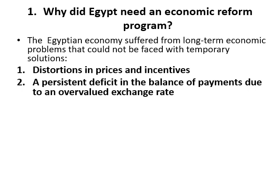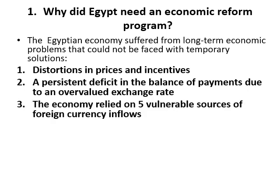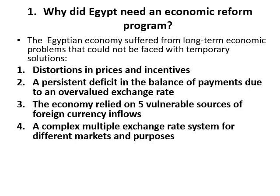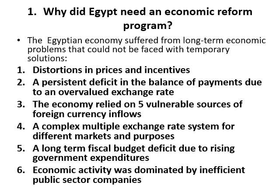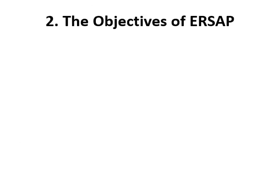The economy relied on just five sources of foreign currency inflows, a complex multiple exchange rate system for different markets and purposes, a long-term fiscal budget deficit due to rising government expenditure, and economic activity dominated by inefficient public sector companies.